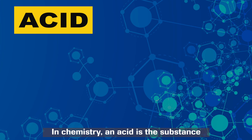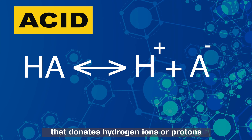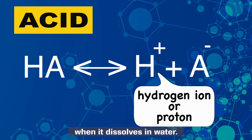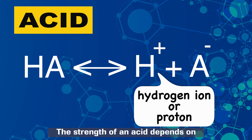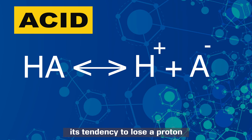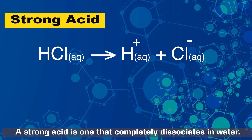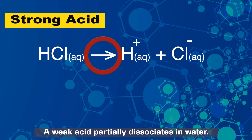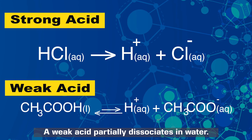In chemistry, an acid is a substance that donates hydrogen ions or protons when it dissolves in water. The strength of an acid depends on its tendency to lose a proton. A strong acid is one that completely dissociates in water, while a weak acid only partially dissociates in water.